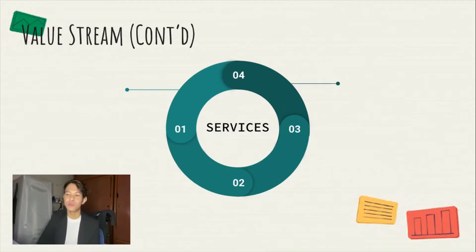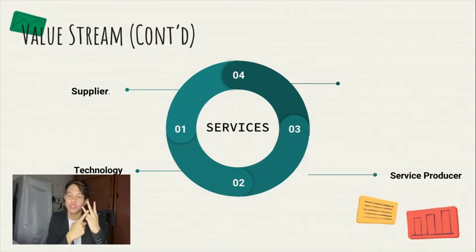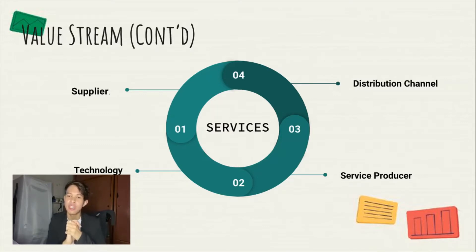Next, we will proceed with the service industry in value stream. For the service industry, the first part is supplier, the second part is technology, the third part is service producer, and the last one is distribution channel. The organisation of the service industry needs to consider adding value to all of these four. But, as with the product industry, it is not limited to only these four — there are much more values that can be added to maximise the organisation as a whole.